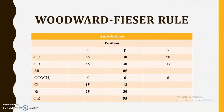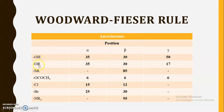Also, if different auxochromes are present, different values are used depending upon the position. If a hydroxyl group is present at the alpha position, add 35; at the beta position, add 30; at the gamma position, add 50 — so the values increase from alpha to gamma. If an OR alkoxy group is present, add 35 at alpha, 30 at beta, and 17 at the gamma position. If an SR group is present, there is no effect at the alpha or gamma position; if at the beta position, add 85.